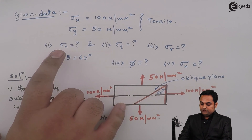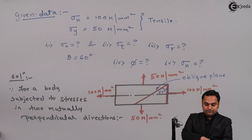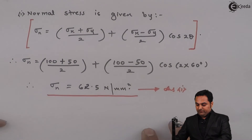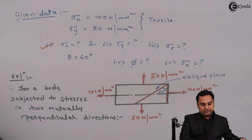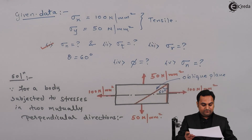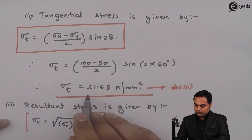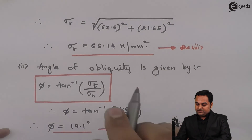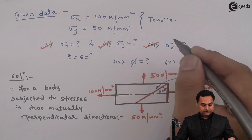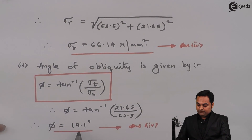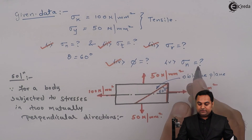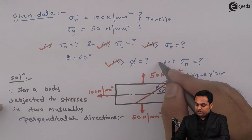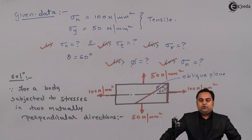So looking back at the problem, there were five unknown values. Normal stress: 62.5 N/mm². Tangential stress: 21.65 N/mm². Resultant stress: 66.14 N/mm². Angle of obliquity phi: 19.1 degrees. Normal stress on the plane of maximum shear: 75 N/mm². After getting all the unknowns, the problem has been completed.